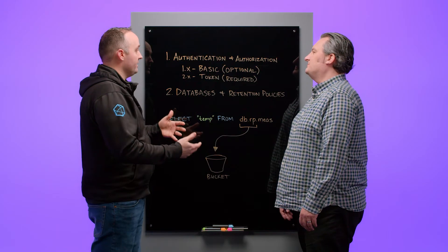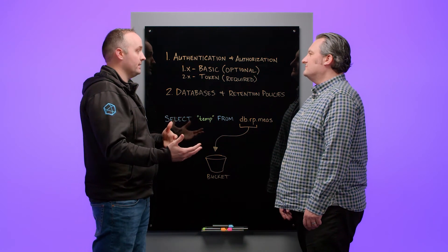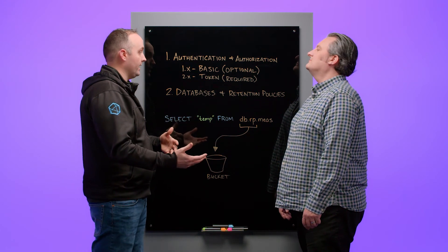So all of this is made possible through what we call a V1 compatibility API that ships with InfluxDB 2.x and Cloud. These are identical API endpoints that work exactly the same that they did in InfluxDB 1.x.